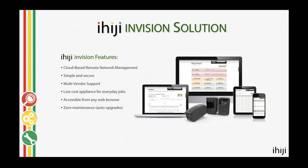IHG Envision is a cloud-based remote network management solution — simple, secure, low cost, and easy to install. It lets you get a better idea of how your networks are performing, get alerted when there are problems, take steps to diagnose and resolve those problems, and make your life easier. We'll talk about the trends in networking that are going to make your jobs as integrators and network administrators more difficult, and where IHG fits into that picture.